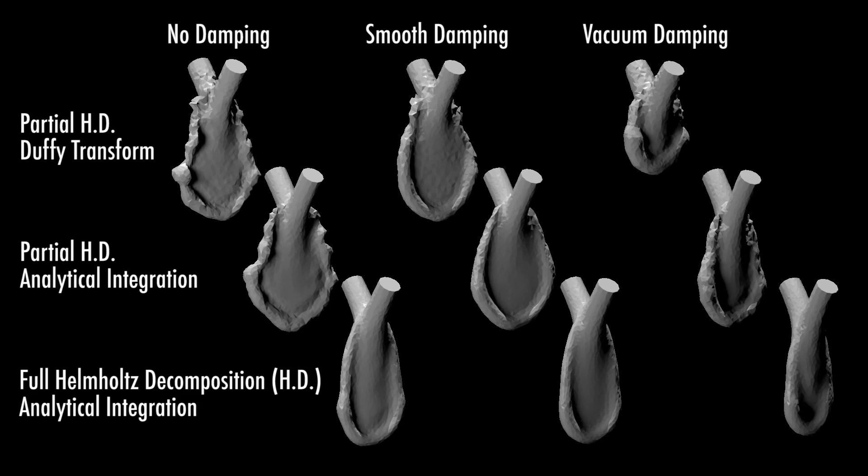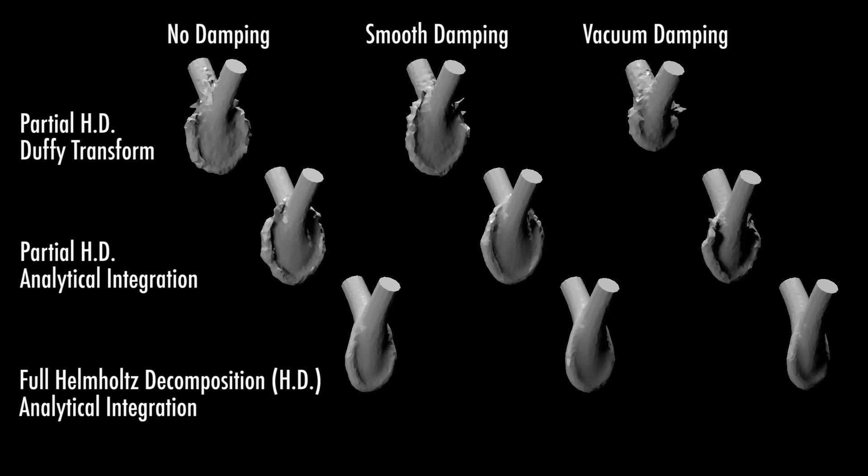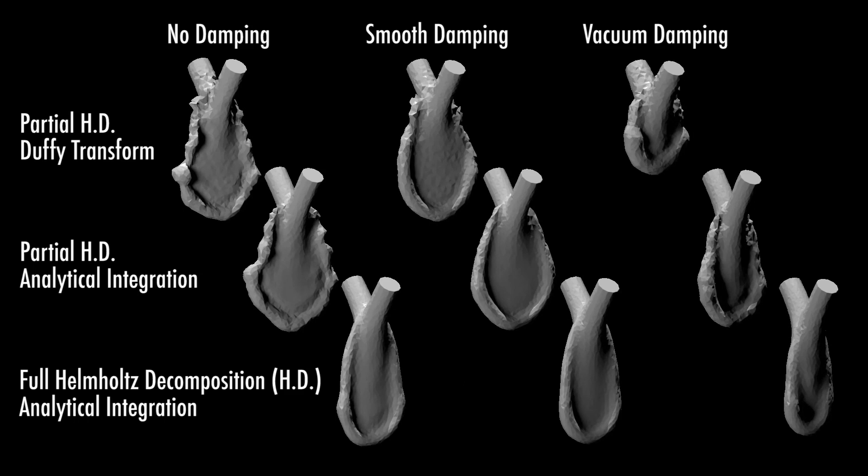Previous work employed a partial Helmholtz decomposition in which the curl is not handled, and a less accurate quadrature rule for the boundary integral is used. Our analytical integration of the boundary integral ensures high-quality results in all kinds of damping setups.